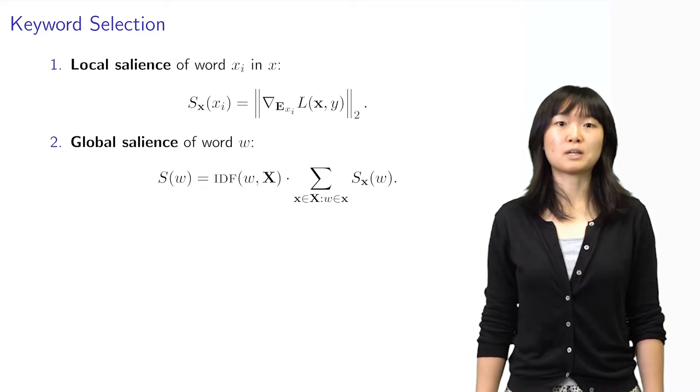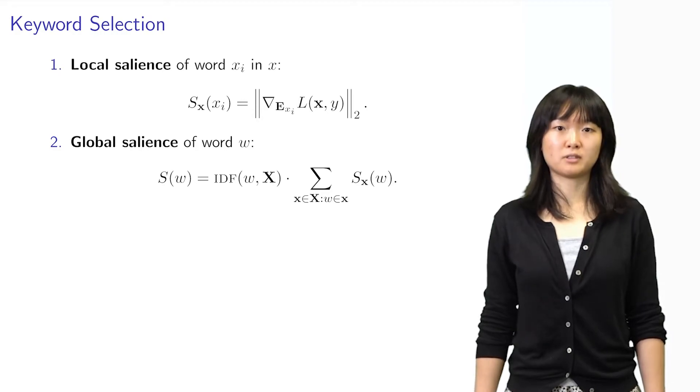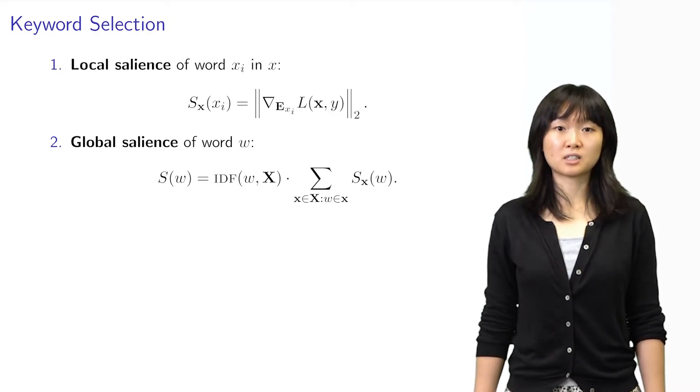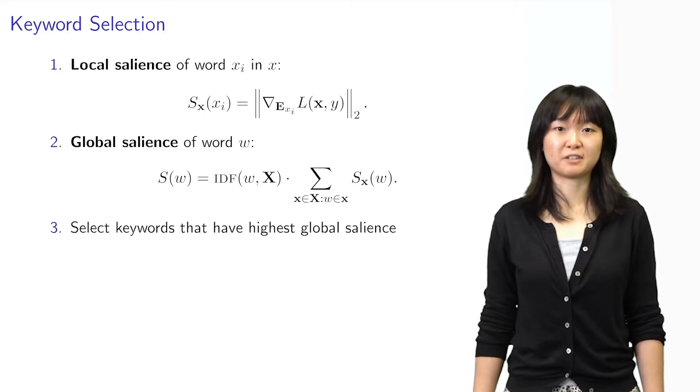To compute this, we add up the example-level salience scores of all occurrences of word type W in the large labeled dataset. We then multiply by the inverse document frequency of W. The IDF term is necessary because it discounts stop words with high document frequency.